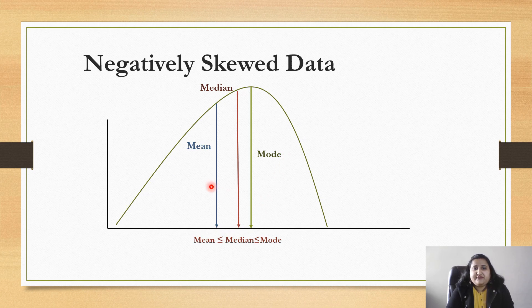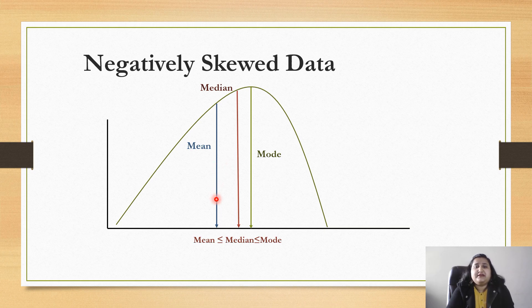Similarly, for negatively skewed data, we have smaller values on the left-hand side, so the mean will shift towards the left. In this case, mean is always less than median, which is less than mode. This is negatively skewed data.